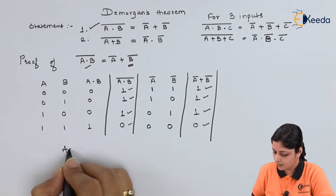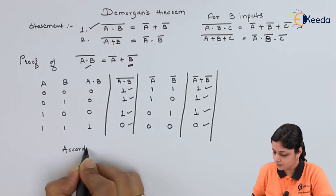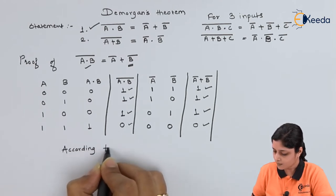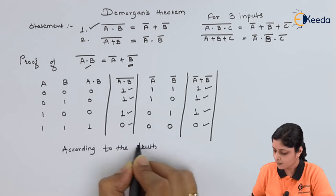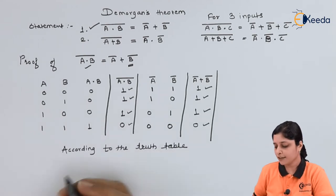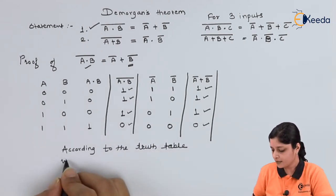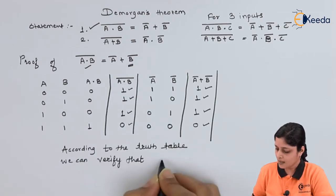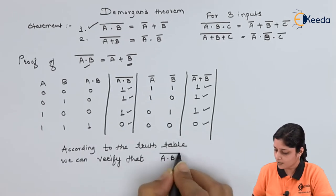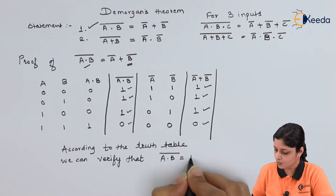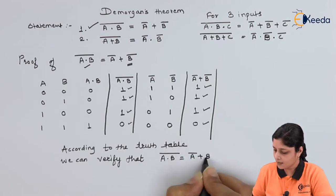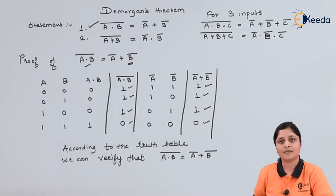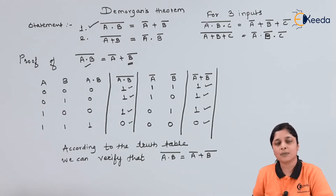According to the truth table we can verify that the complement of A dot B equals A-bar plus B-bar. In this way, using the truth table, you can prove the first De Morgan's theorem.